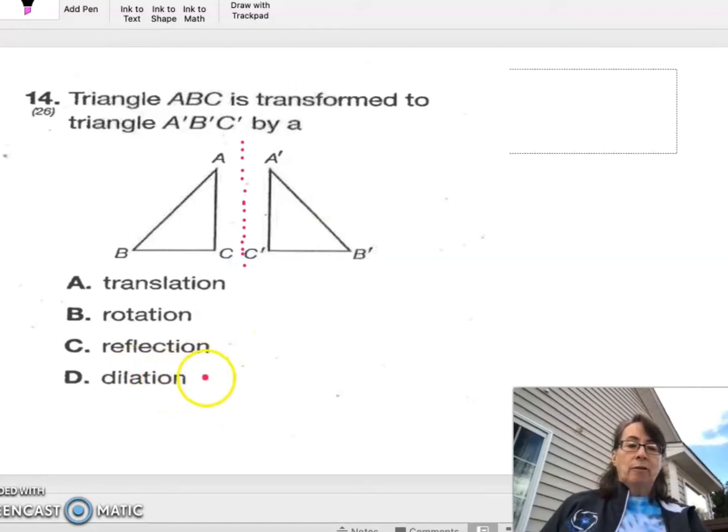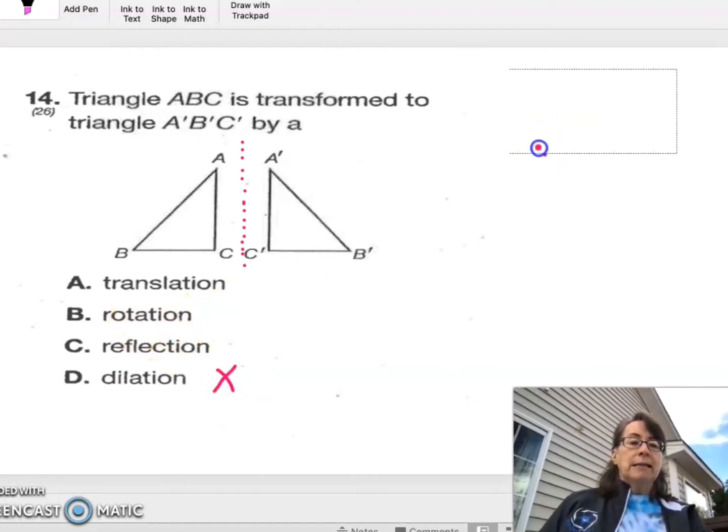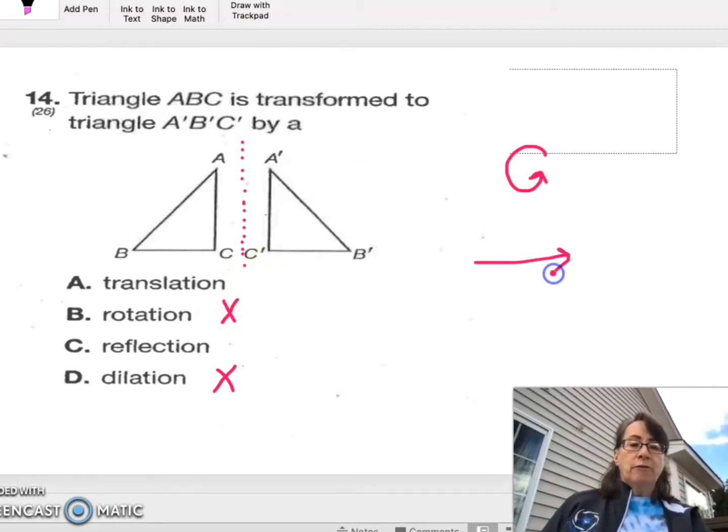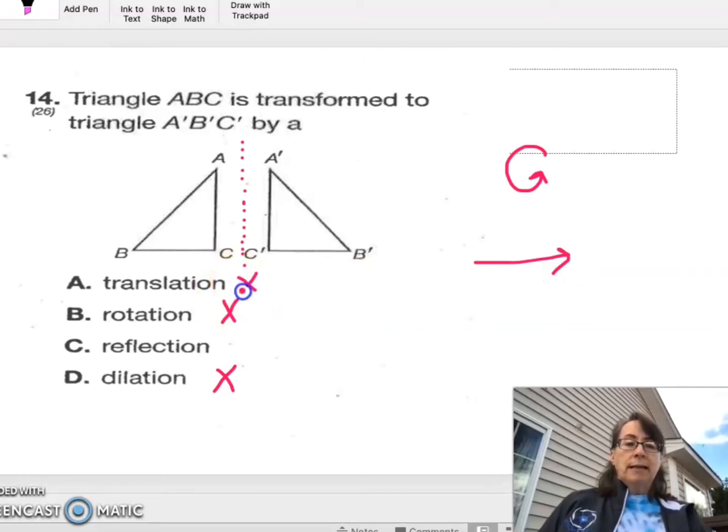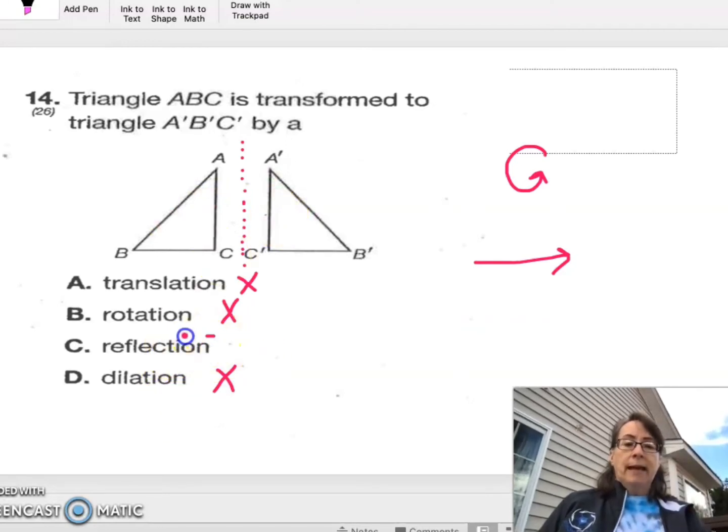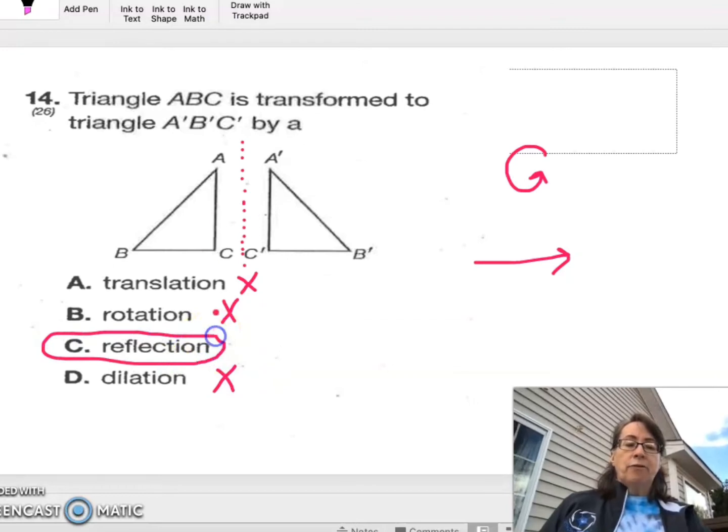Dilation makes it greater or smaller in size. So that's not it. Rotation is when it spins around. Translation is when it just moves to a different place. But it is a reflection. And when there's a reflection, there is a line of reflection right in between the two. So basically, if this were a piece of paper, you could fold it right there on that line of reflection and this would fold right over to the other image.